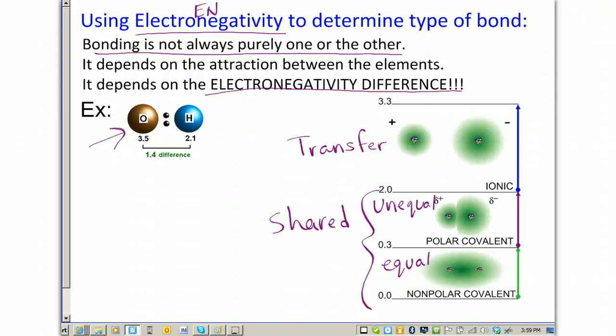For example, here we have oxygen versus hydrogen. And oxygen has an electronegativity of 3.5. Hydrogen has an electronegativity of 2.1. If I subtract them, I get an electronegativity difference of 1.4. And if you'll notice, 1.4 falls in the polar covalent range between 0.3 and 2.0. And so, I would call this a polar covalent bond.